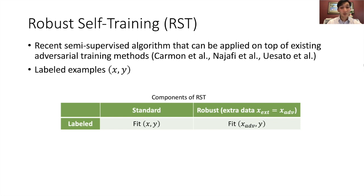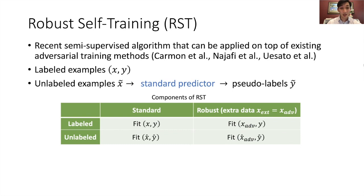Robust self-training, or RST, is a recent semi-supervised algorithm that can be applied on top of existing adversarial training methods. First, given some labeled examples, RST performs adversarial training with a standard and a robust component of the loss. Here, adversarial examples X ADV are our extra data. And given some unlabeled examples, RST first trains a standard predictor on only the labeled data, and then uses it to pseudo-label the unlabeled data. In addition to the labeled component of the algorithm, RST also performs adversarial training on the pseudo-labeled data as well with a standard and a robust component.